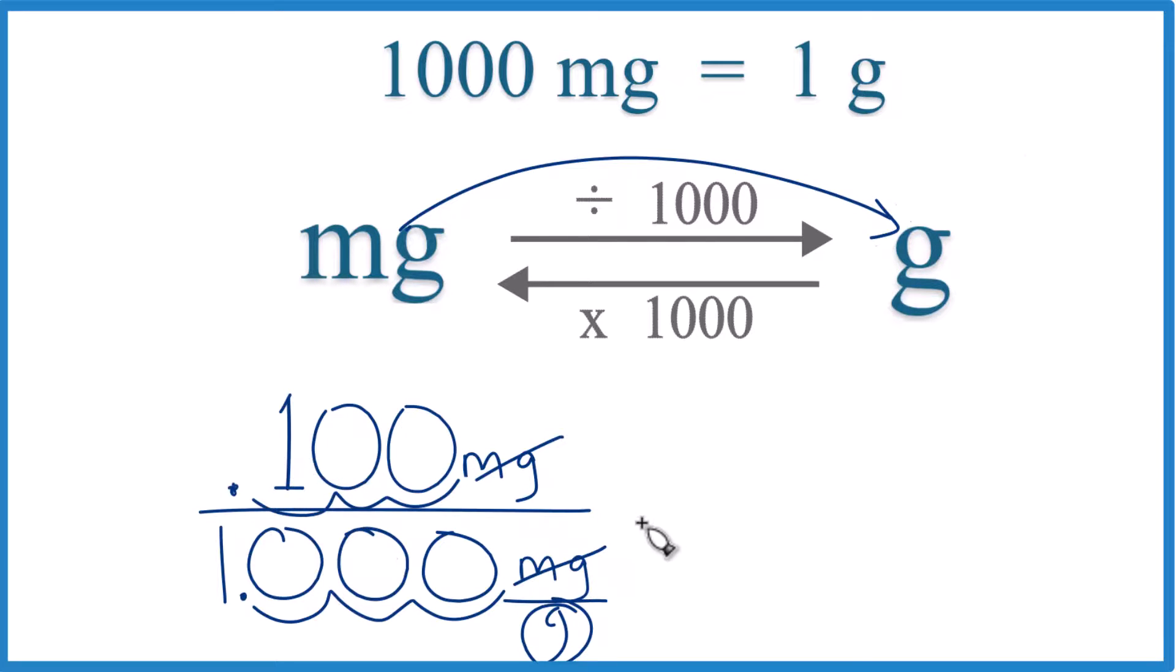And so 100 milligrams, that equals 0.1 grams. We don't need to write these extra zeros over here. That's it. 100 milligrams, when you convert it to grams, you get 0.1 grams.